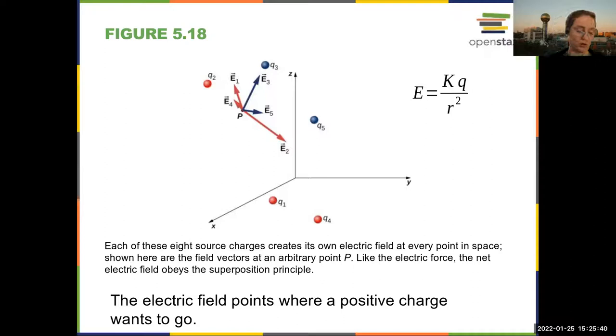So charge one right here is positive. So the electric field from charge one is going to point away from charge one. Likewise for charge two, except that it is now a little closer to point P. So the electric field from charge two is a little bit larger. The charge from charge four also points away from charge four because it is also positive. You will see that this is the farthest from point four. So it's the smallest arrow.